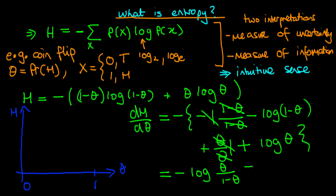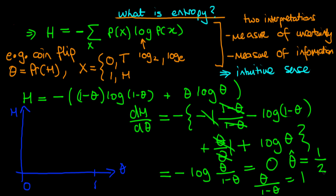We're looking for the condition when this derivative is equal to zero. Log of something equals zero only if that argument equals one, so we need theta/(1 − theta) = 1. We could confirm it's a maximum by taking the second derivative, which turns out to be negative. The maximum occurs at theta-hat equals one half, so the entropy function is maximized when theta equals one half.